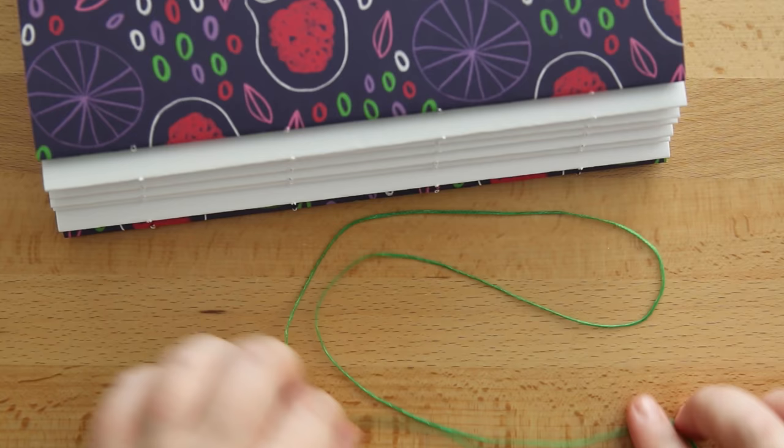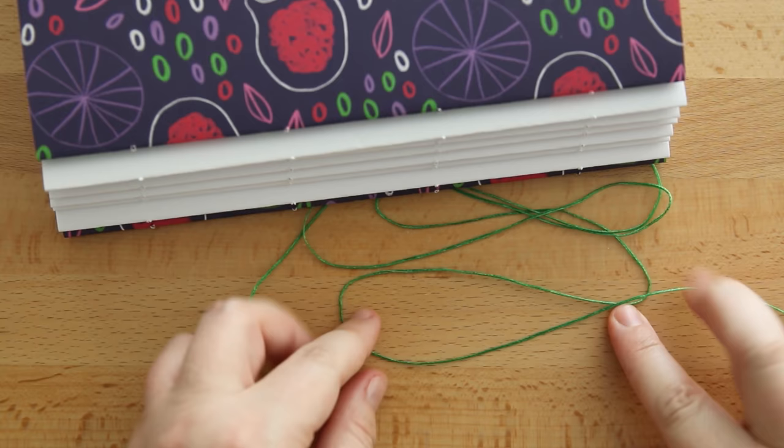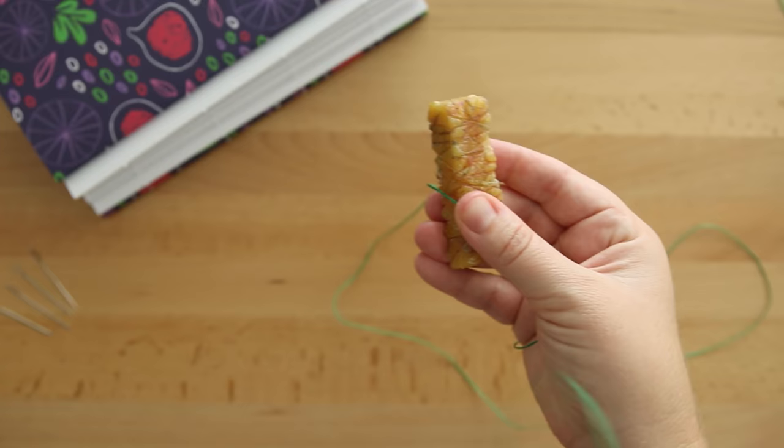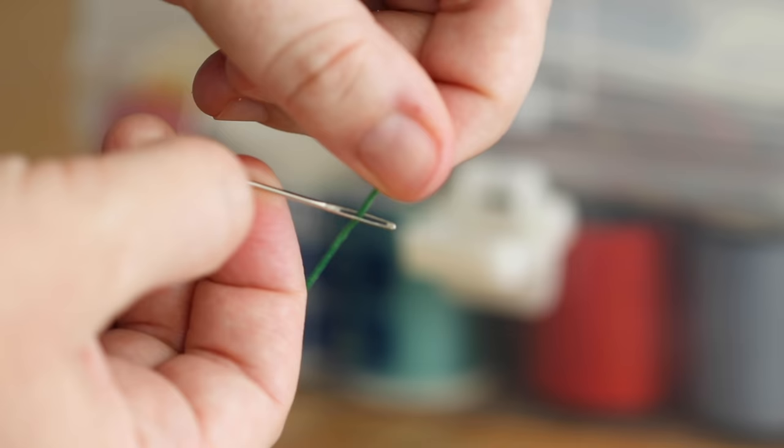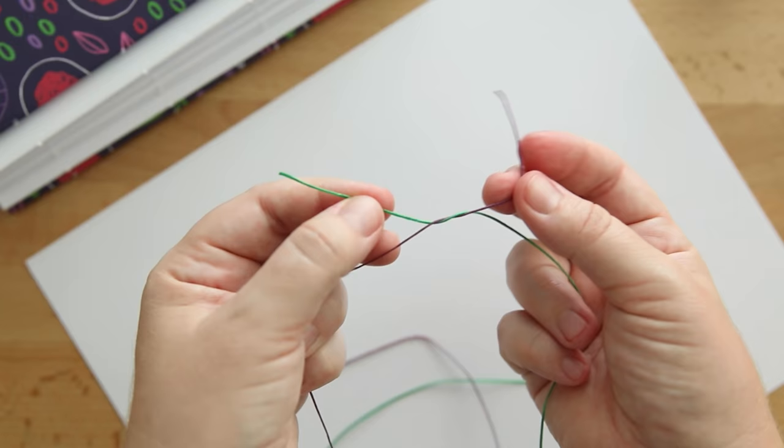To estimate the amount of thread, I like to string the thread along the width of the section just to get a good estimate, but honestly, this binding doesn't take that much thread and this is way more than enough. I prefer a more grippy thread, so I'm running it along a piece of beeswax.